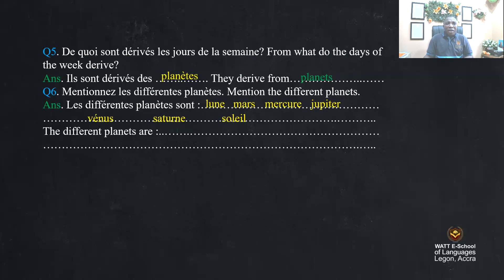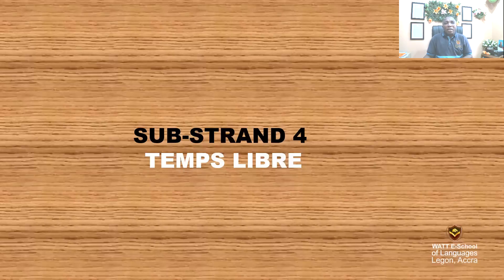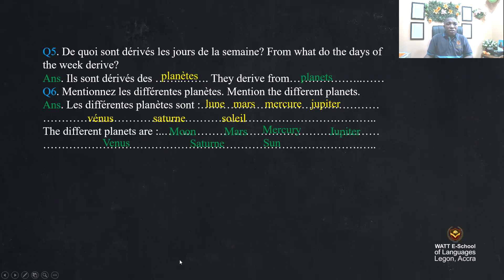Les différents planètes sont: lune, Mars, Mercure, Jupiter, Vénus, Saturne, et le Soleil. These are the days of the week in French and what these days derive from. In our next lesson, we shall have a look at something very interesting — do not miss out. Be there. Merci. Au revoir.